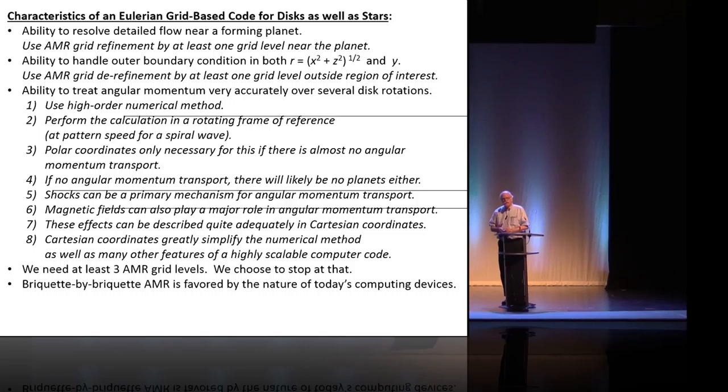What I'd like to do is to convince you that this code that I'm building will be special and will have some good properties for doing disk problems. So I'm introducing AMR, and I'm doing it with only three levels. And so part of the argument is that three levels is enough. I want to give you my arguments for why I am doing that.